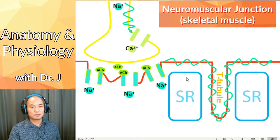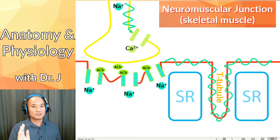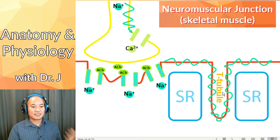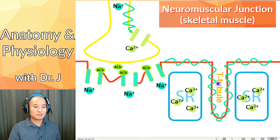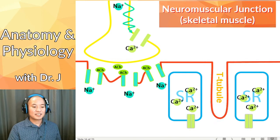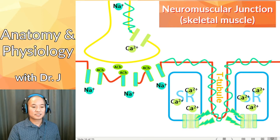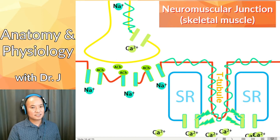The sarcoplasmic reticulum is the special endoplasmic reticulum of muscle cells. At rest, it contains a lot of calcium — it is the storage place for calcium when the muscle cell is at rest. But when action potentials travel through, they open ion channels that allow calcium to flood out from the sarcoplasmic reticulum and into the cytosol.